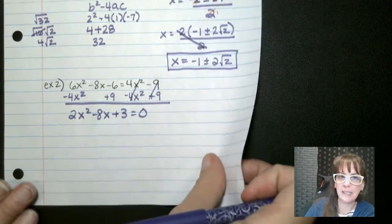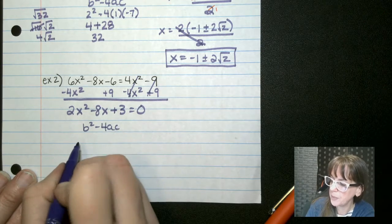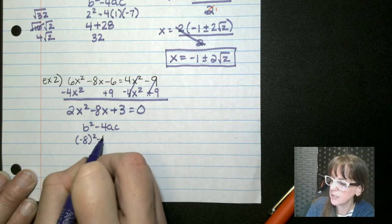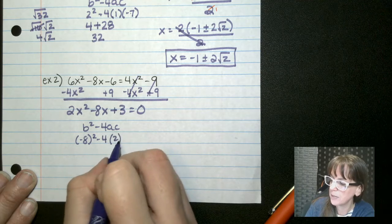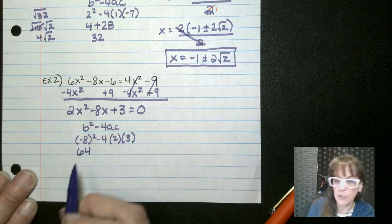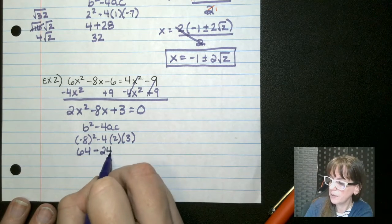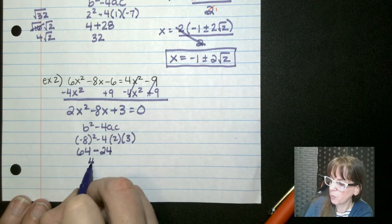All right. Let's be lazy like me and do our discriminant first. b squared minus 4ac. So b is negative 8 squared minus 4 times a, which is 2 times c, which is 3, 64. And now in this case, it's okay just to bring down your minus because there's nothing else there. Minus 24. That gives me 40.